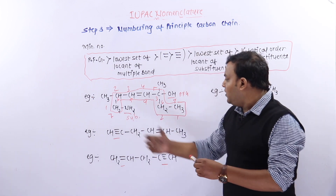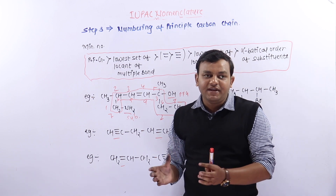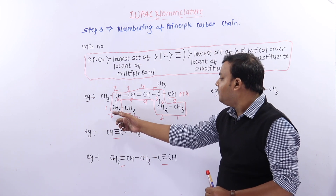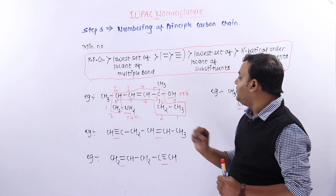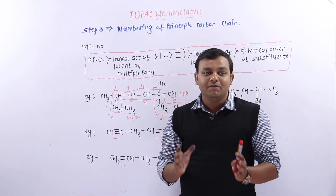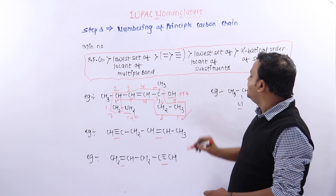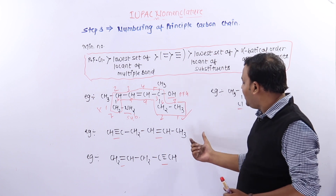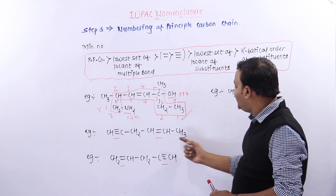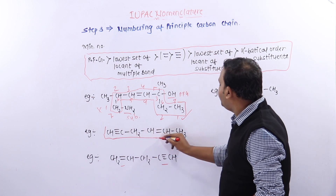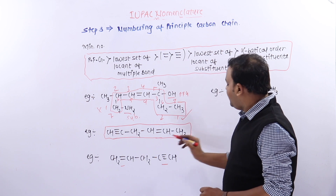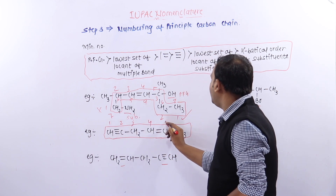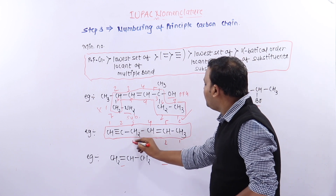Here we have two different numbering options. The numbering can be 1, 2, 3, 4, 5, 6, 7 from one direction or 1, 2, 3, 4, 5, 6, 7 from the other direction. Second example: if we have no principal functional group, second step is principal carbon chain selection — one chain — this is the principal carbon chain. Next step: numbering of principal carbon chain can be done two ways: 1,2,3,4,5,6 or 1,2,3,4,5,6.